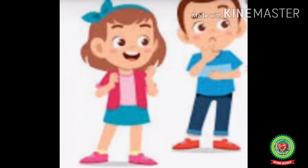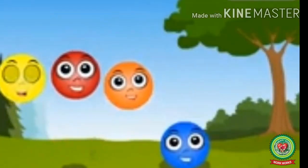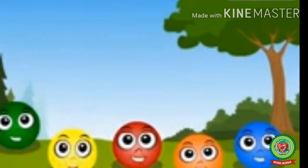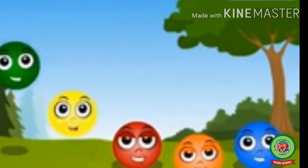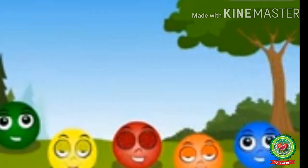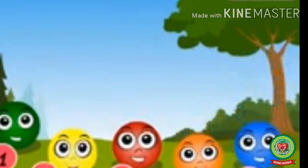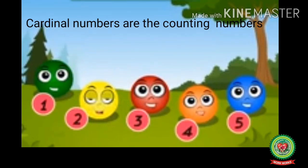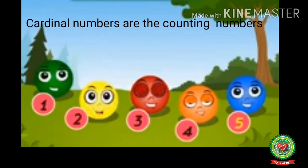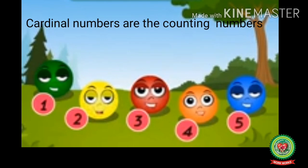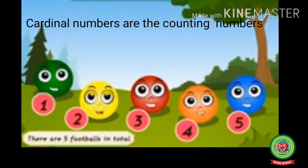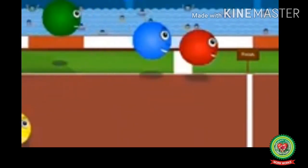Now let us understand the difference between cardinal and ordinal numbers through this video. Look at these colorful and bright footballs. Can you tell how many footballs there are in total? Let us count — there are one, two, three, four, five. These counting numbers are also called cardinal numbers. The cardinal numbers tell us the quantity. Hence there are five footballs in total.